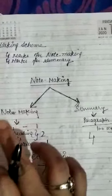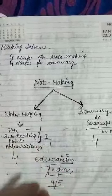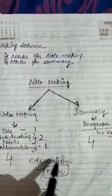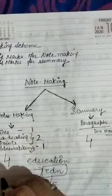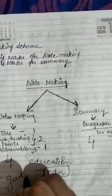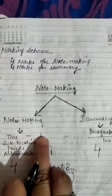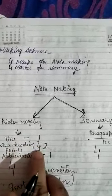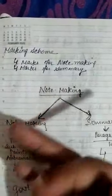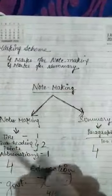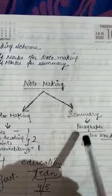In notemaking, one mark is for the title and one mark is for abbreviation. Abbreviation is a short form of a long word — for example, education can be abbreviated as EDN, government as GOVT. It carries one mark and the title carries one mark. Subheadings and points contain two marks, which you have to extract from the passage. For the summary, you have to write a short paragraph of 100 words, and it will carry four marks.